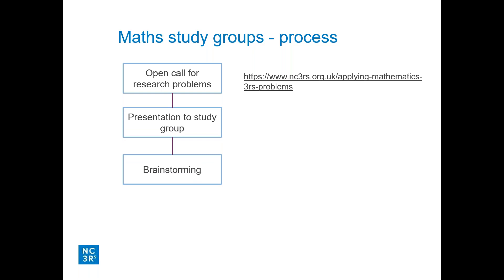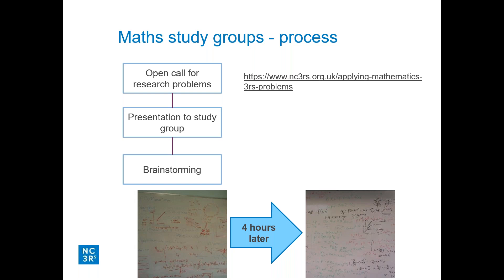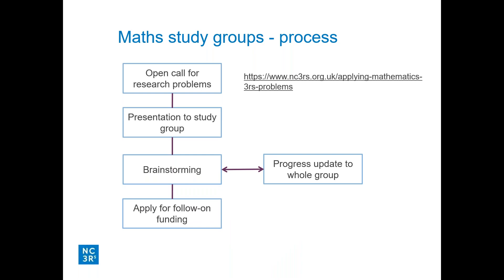The mathematicians select which problems they want to work on and go off into separate rooms with the biologists to brainstorm. Very quickly they're able to turn those biological problems into mathematical language. Because mathematicians and biologists are working together, that iteration happens very quickly and they are able to bring each other along so they understand exactly where each is coming from. Critically, the groups get back together frequently to give progress updates and get input from other mathematicians. At the end of the week-long study group, they can apply for follow-on funding to finalize results and put together publications.